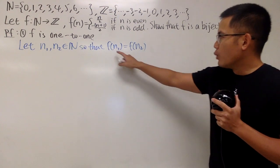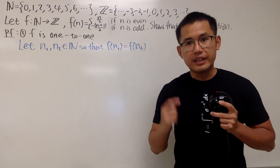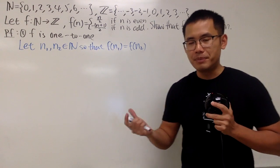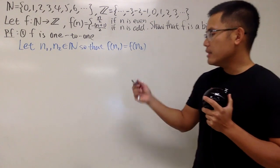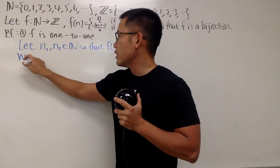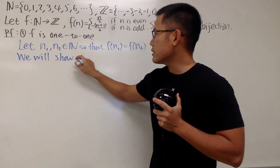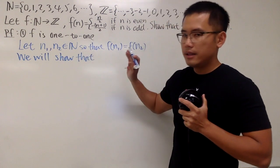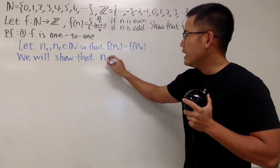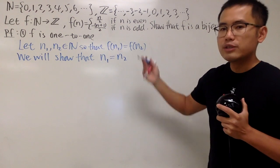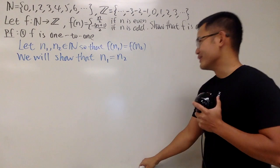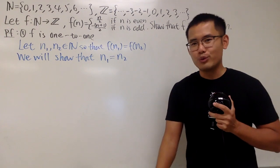So you just say so that, and the property is, in fact, they have the same output, meaning f(n1) is equal to f(n2), like this. So you just always start with this whenever you want to show f is being one-to-one. If you put this down, you can earn some partial credit, I believe.